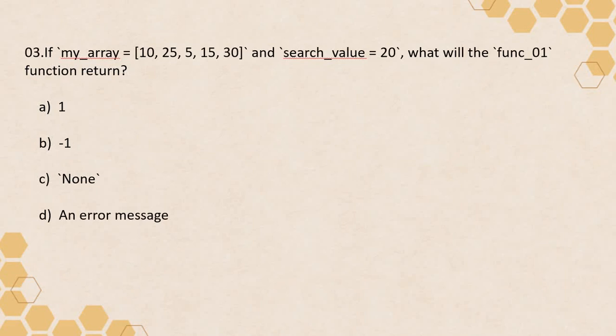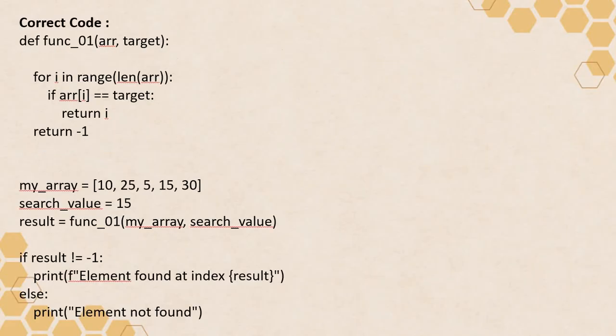This entire question can be a five marker, where one code is there and five related questions are based on it. If you get the concept right from the code you can solve all five correctly, but if you get it wrong, all five will be bad. For your support, I am providing the correct code here. There can also be a question where you have four options and have to correctly identify the version of function_01 that is the corrected one. Do mention what you think the correct answers are — I don't want to spoon-feed you, so provide your answers in the comments.